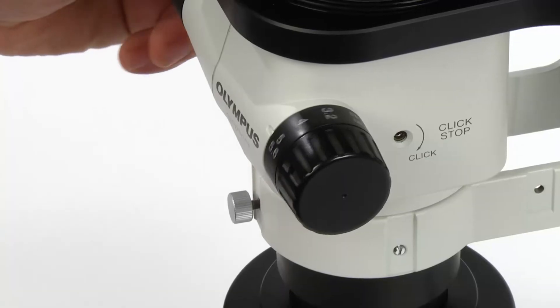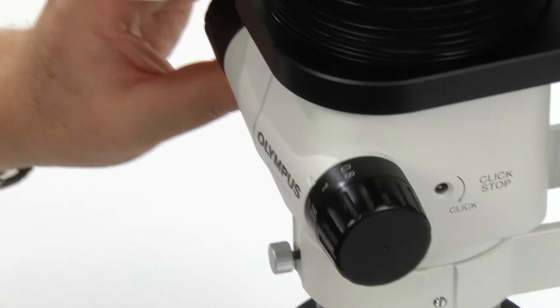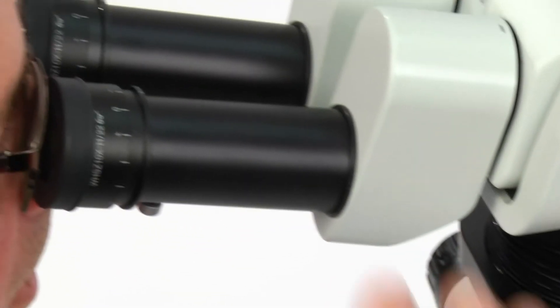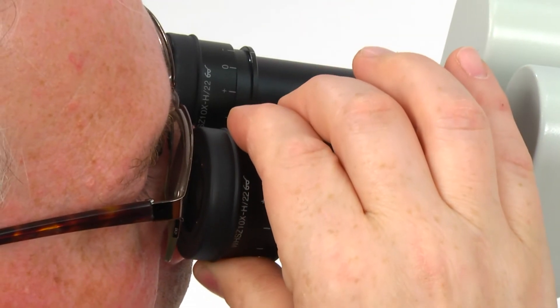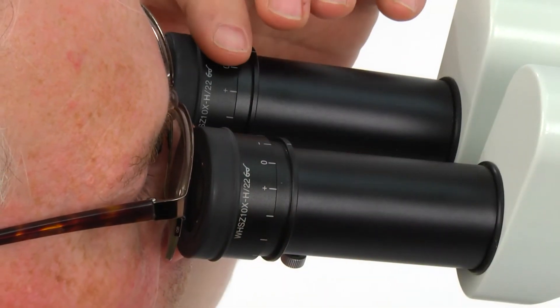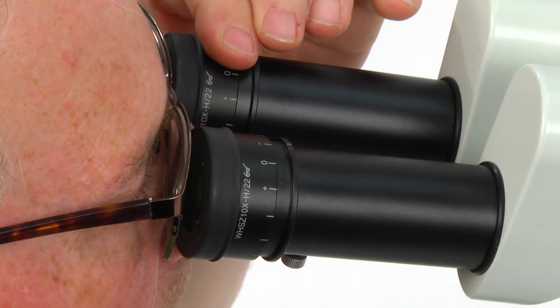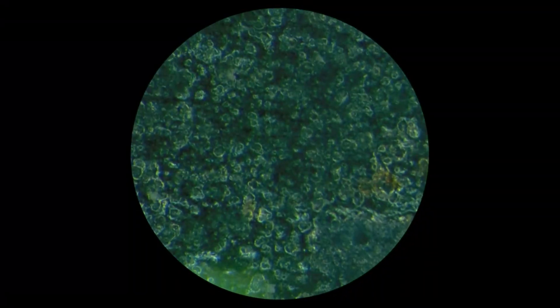Finally, set the zoom adjustment knob for the lowest magnification and rotate the diopter adjustment ring of the left and right eyepieces to bring the sample into focus. The adjustment is now complete and the image should now remain in focus from low to high zoom magnification.